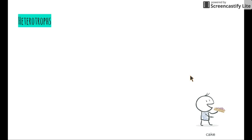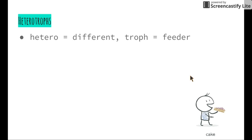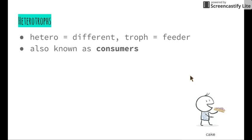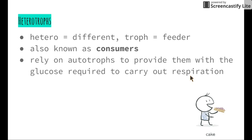Now let's look at heterotrophs. When we break down the word 'heterotroph,' 'hetero' means different. So a heterotroph is literally a 'different feeder' — they require different sources of energy than they can provide for themselves. A term we've used a lot is 'consumer' — they consume other organisms whether they be plants or animals, and heterotrophs rely on autotrophs to provide them with glucose.